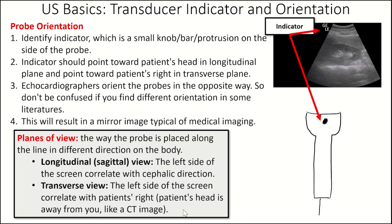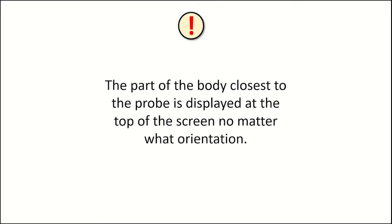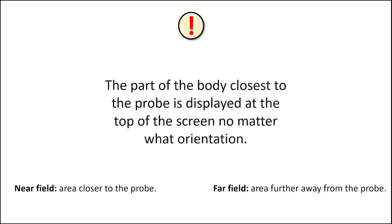In terms of up and down — near field versus far field — the near field at the top of the ultrasound image is going to be the thing closest to your probe. Further down means deeper. The part of the body closest to the probe is displayed at the top of the screen no matter the direction. This is critical — for example, when doing a cardiac ultrasound, the right ventricle is always closest to the skin, so it will always appear closest to the top of the ultrasound image.